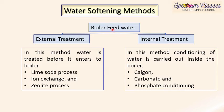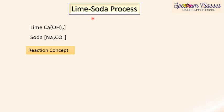For boiler feed water treatment, there are two methods: external treatment and internal treatment. In external treatment, water is treated before it is fed to the boiler. In internal treatment, conditioning is done inside the boiler. External methods include the lime soda process and ion exchange process; internal treatment includes carbonate conditioning and phosphate conditioning.